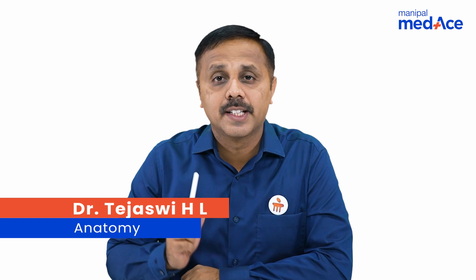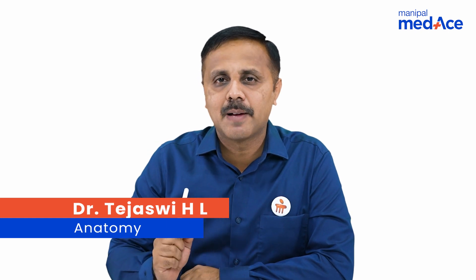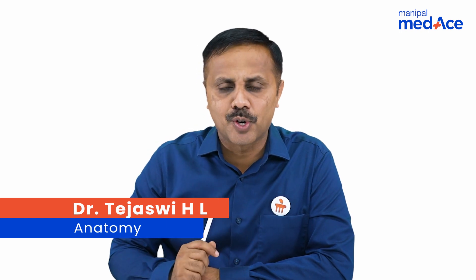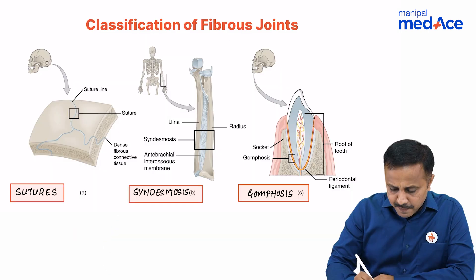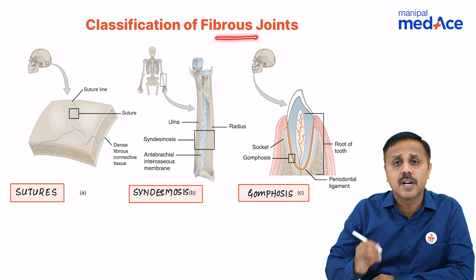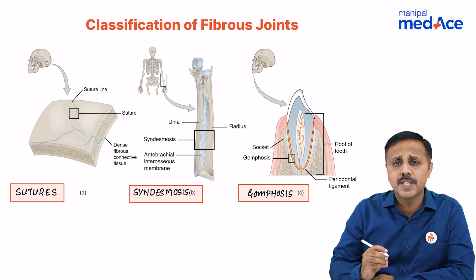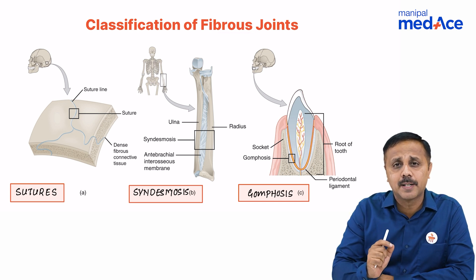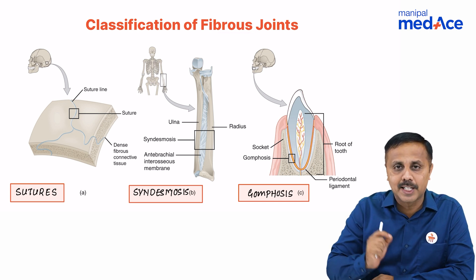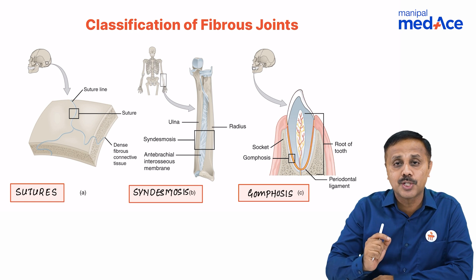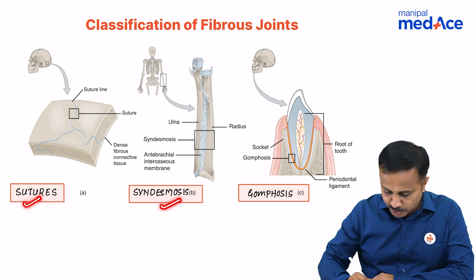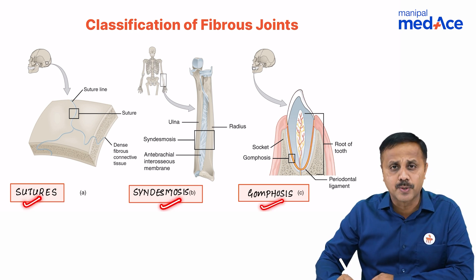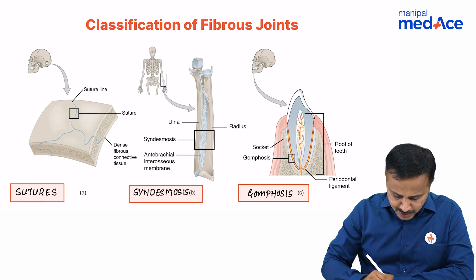Let's quickly revise the types and examples for fibrous joints. Fibrous joints are those in which two bones are interconnected by fibrous connective tissue, and these are of three major types: sutures, syndesmosis, and gomphoses.